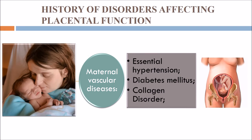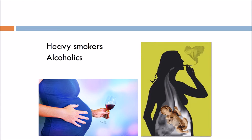History of disorders affecting placental function is very important. These include maternal vascular diseases such as essential hypertension, diabetes mellitus, and collagen disorders. Heavy smoking or alcoholism in the mother can also be a cause of IUGR.